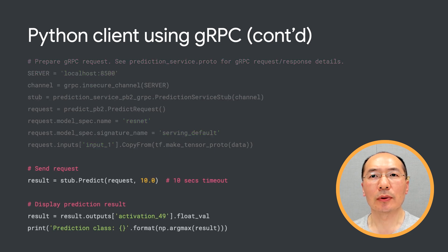Now we use the stub to send the request to TensorFlow Serving. Once we get the response back, we can extract the output tensors. So this is how you would use Python to send gRPC requests. But it is actually a little bit more involved than this — we skipped the parts to generate the client stub code because TF Serving has done it for you.